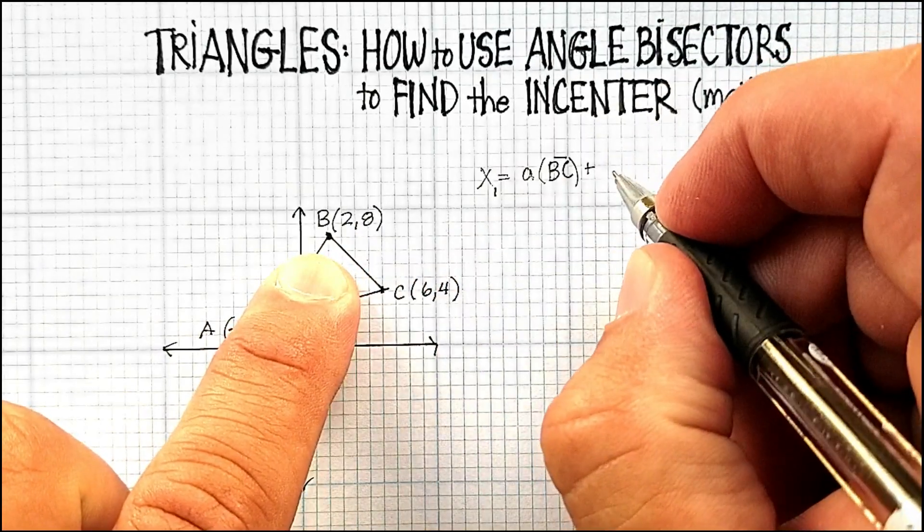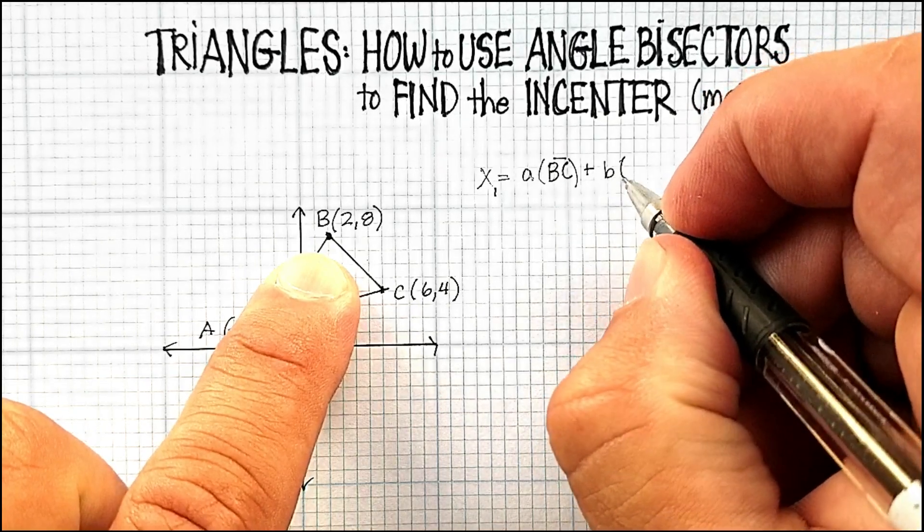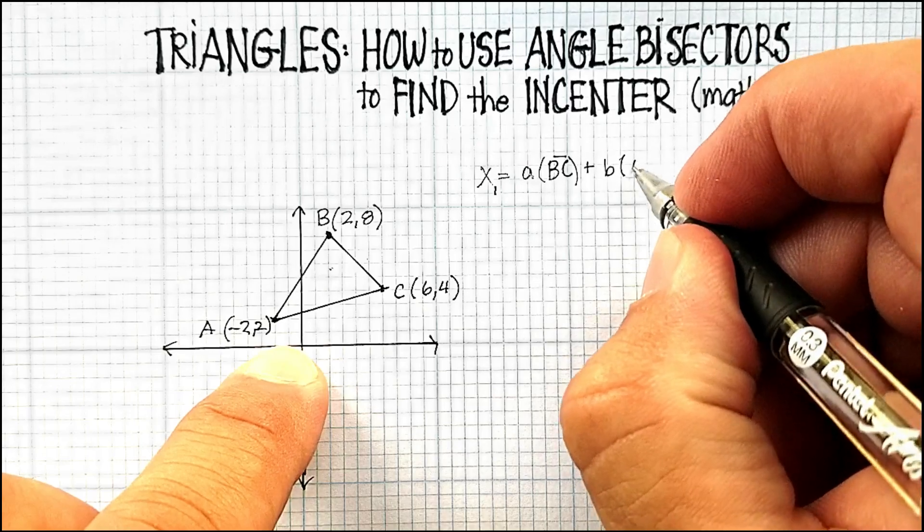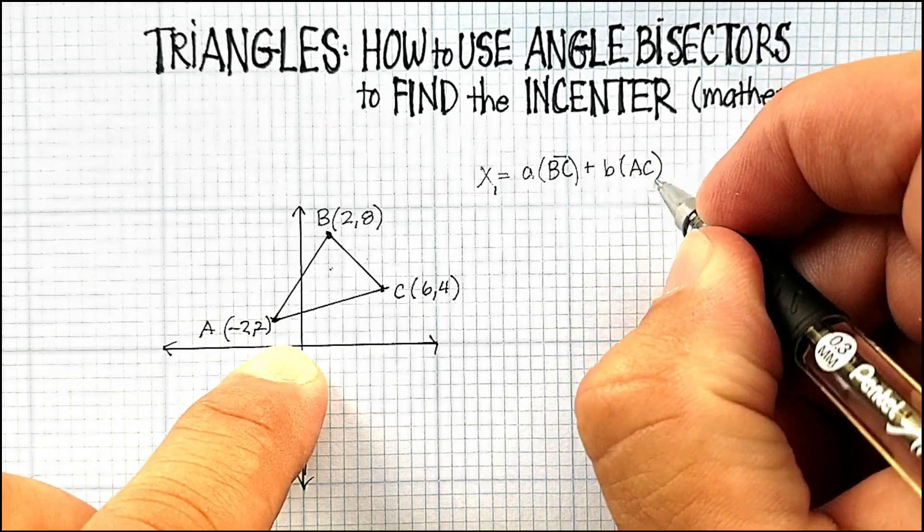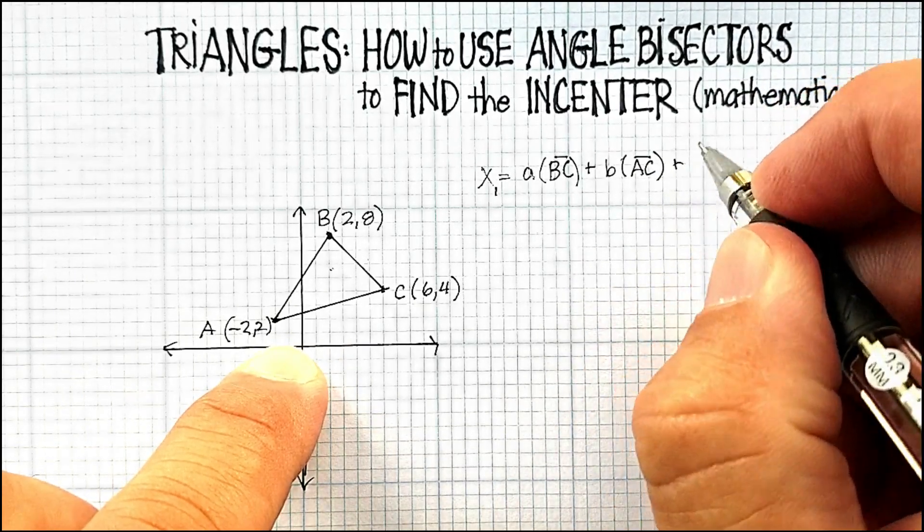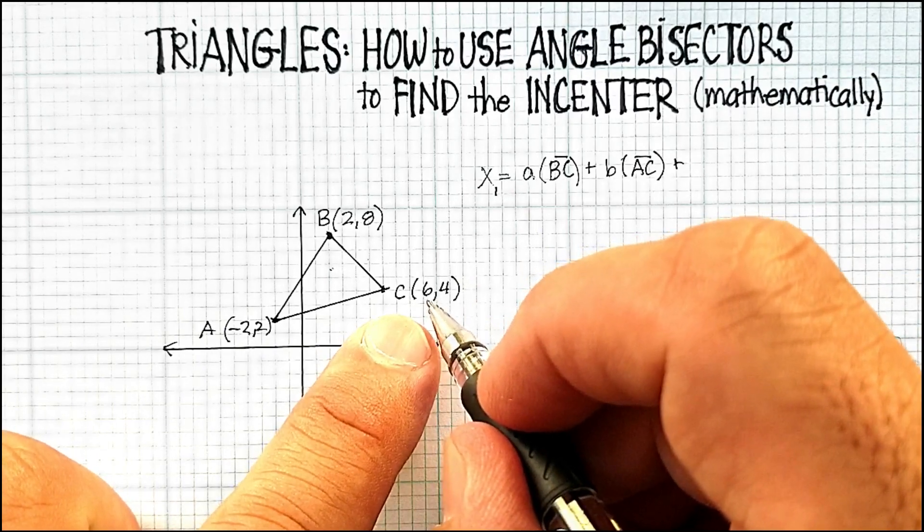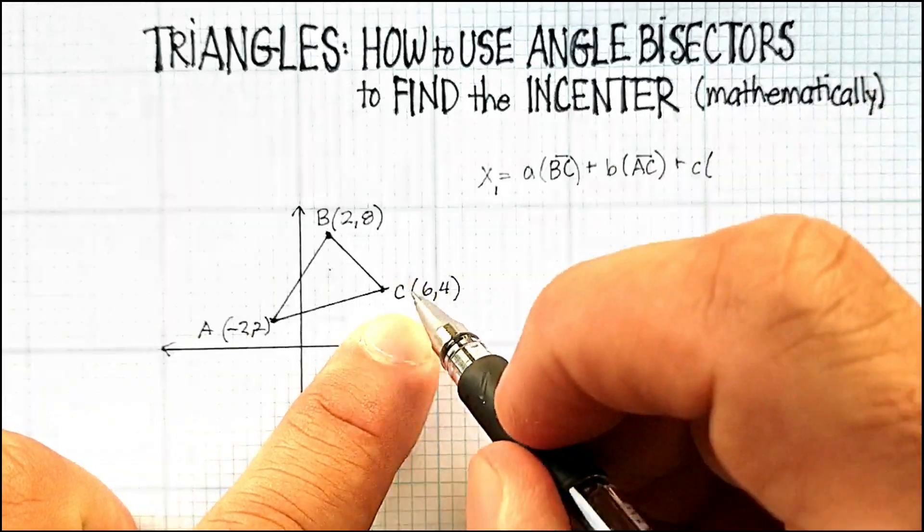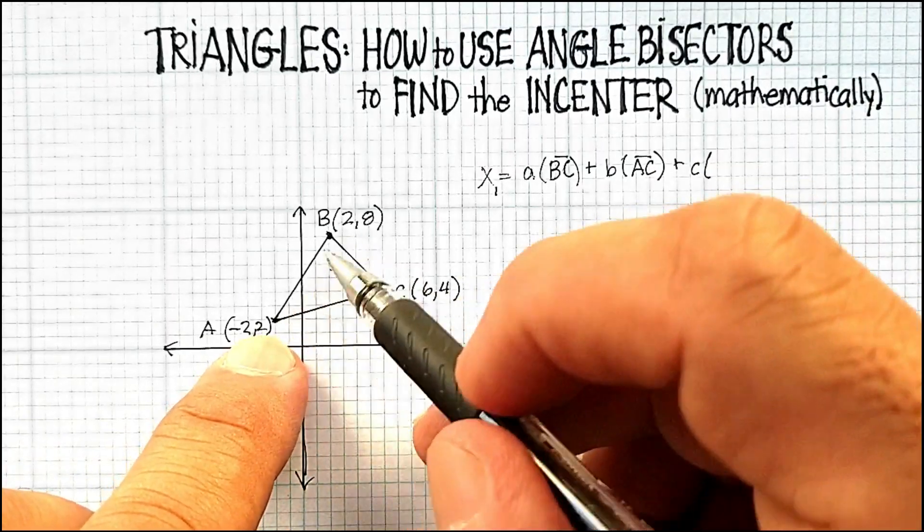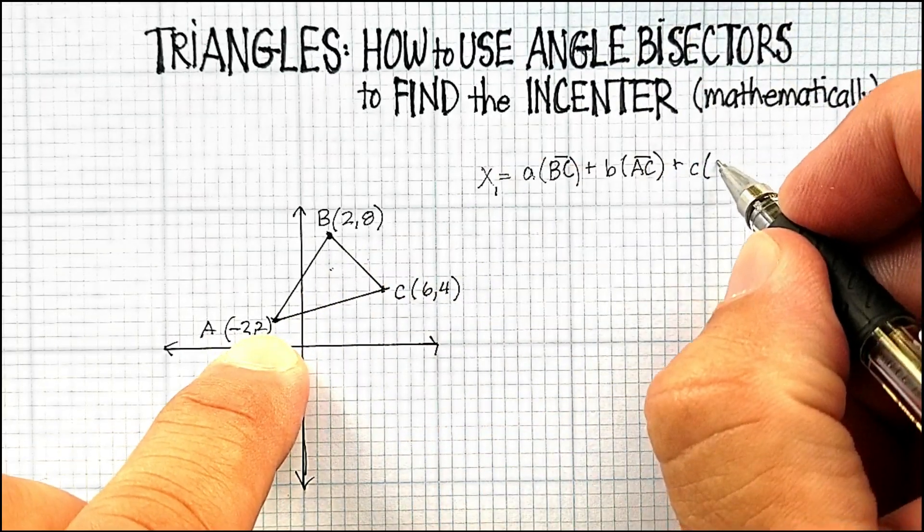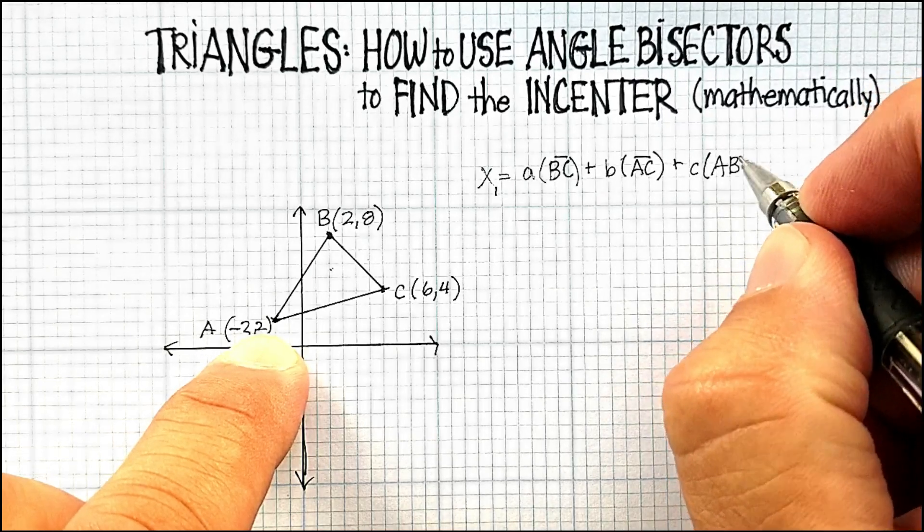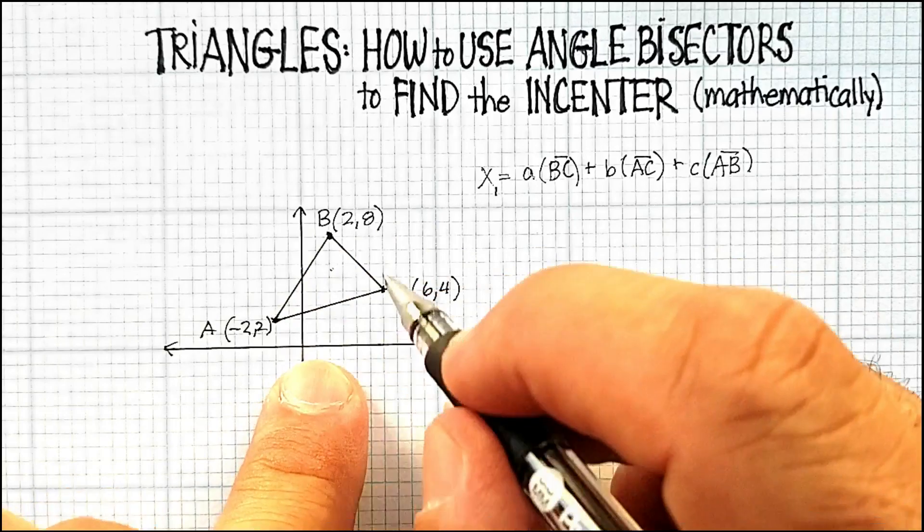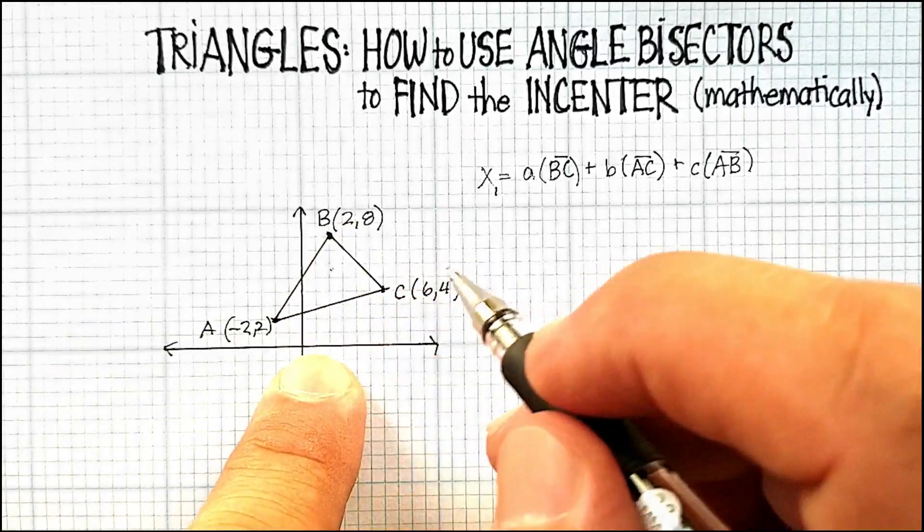Times the length of the opposite side, which is AC, plus the x value of the C point, we'll call that small c, times the distance here of line segment AB. All of that divided by the perimeter of the triangle itself.